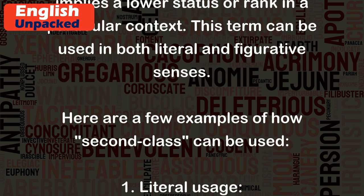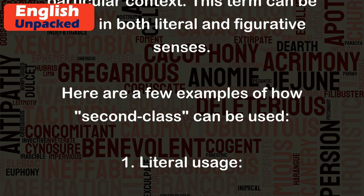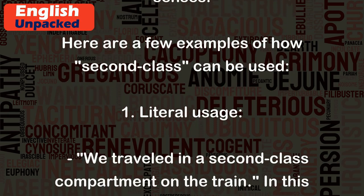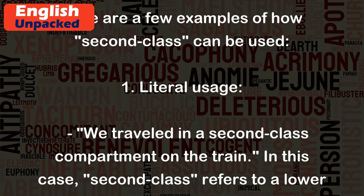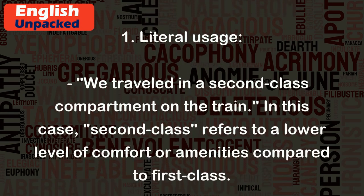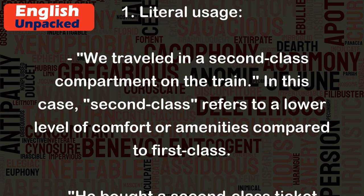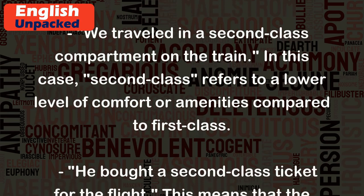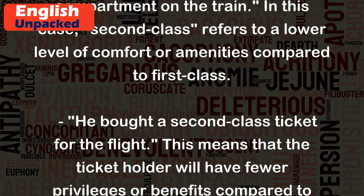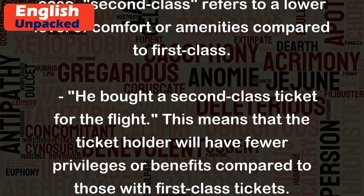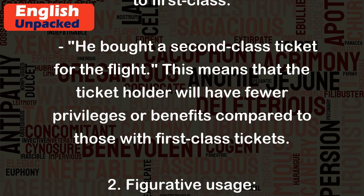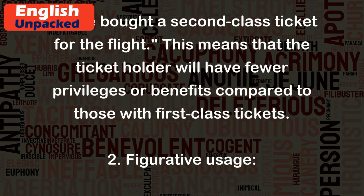Here are a few examples of how "second class" can be used. 1. Literal Usage: We traveled in a second class compartment on the train. In this case, "second class" refers to a lower level of comfort or amenities compared to first class. He bought a second class ticket for the flight. This means that the ticket holder will have fewer privileges or benefits compared to those with first class tickets.